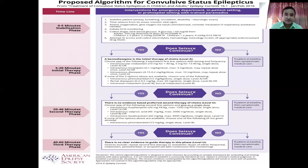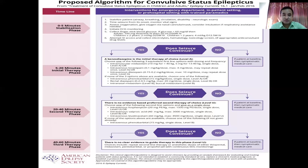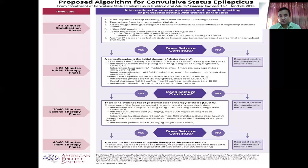If some patients have continuous seizure activity despite benzodiazepines, then we give a second therapy phase: antiepileptic drugs like fosphenytoin (loading dose 20 mg/kg), valproic acid (40 mg/kg), or levetiracetam (60 mg/kg). We load the patient with these antiepileptic drugs in the emergency if there is ongoing seizure activity. If seizure continues, we may have to sedate the patient with thiopentone and midazolam, intubate, and transfer to the ICU.